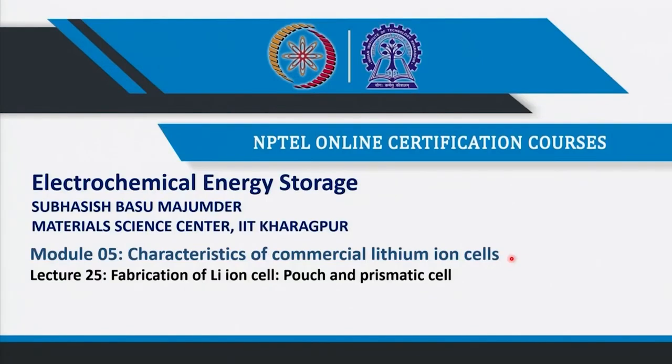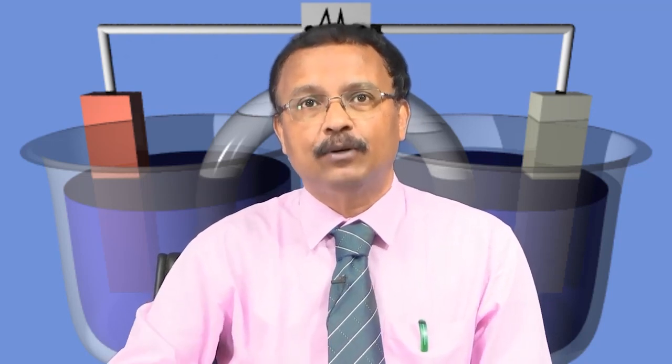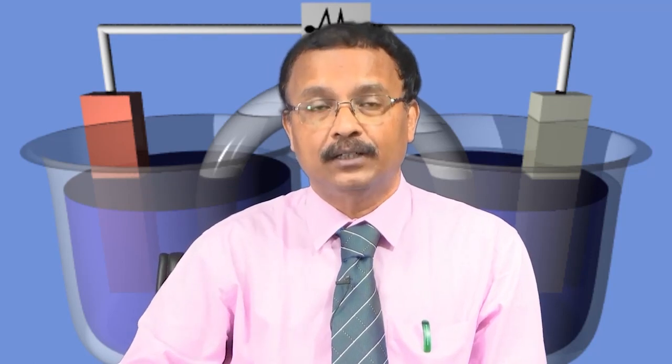Welcome to my course Electrochemical Energy Storage. This is module number 5 where I am describing the characteristics of commercial lithium-ion cells, and this is lecture number 25. In this lecture, I will describe the fabrication of a lithium-ion pouch cell; the same principle is adopted to make a prismatic cell as well. The difference from the cylindrical cell covered in the last lecture is that the capacity is relatively low because of size, whereas here, each individual pouch cell can give you say 35 ampere-hour or 100 ampere-hour kind of capacity.